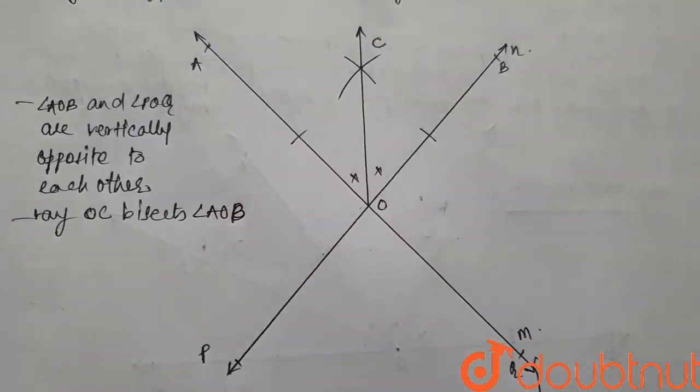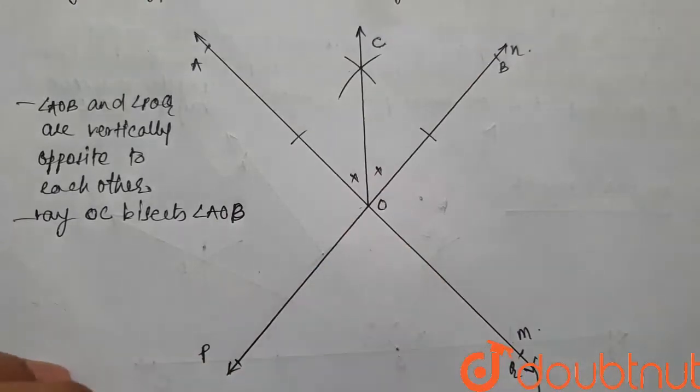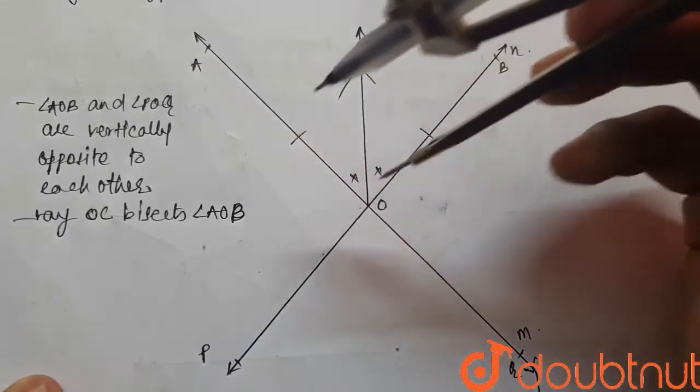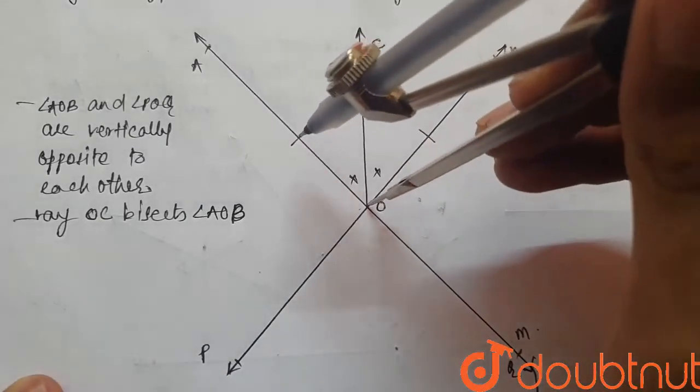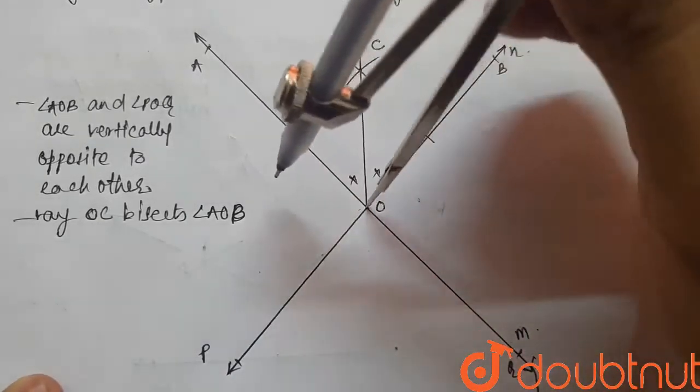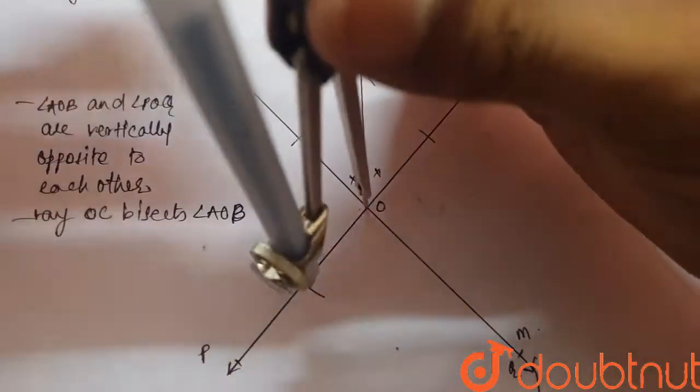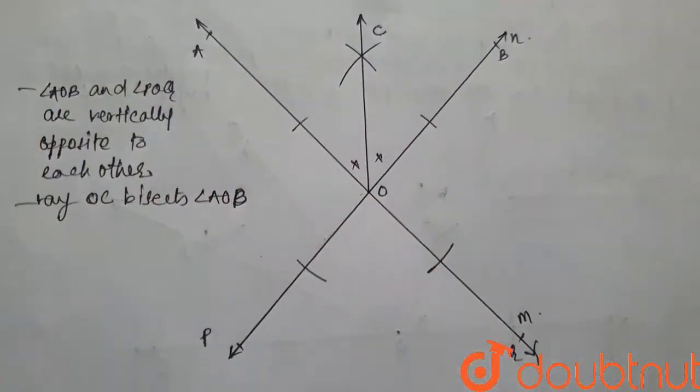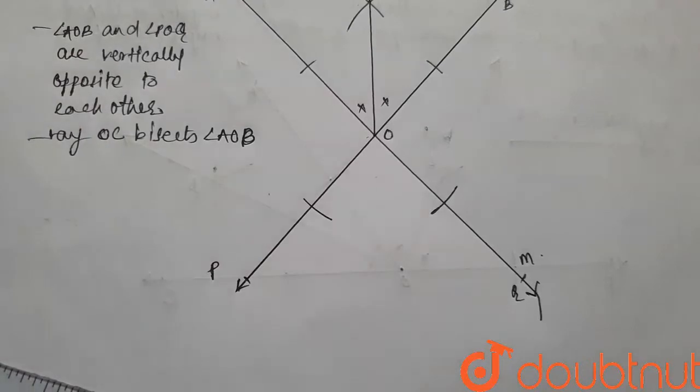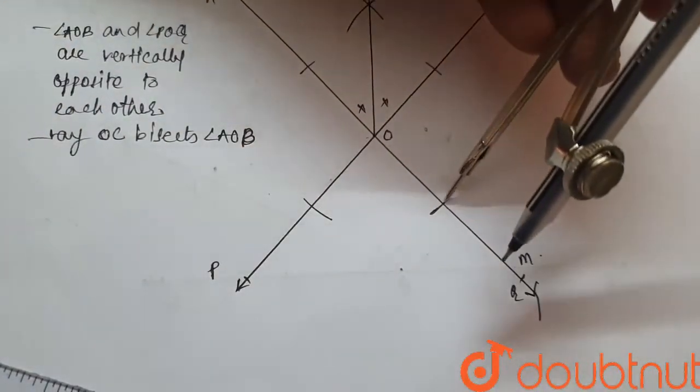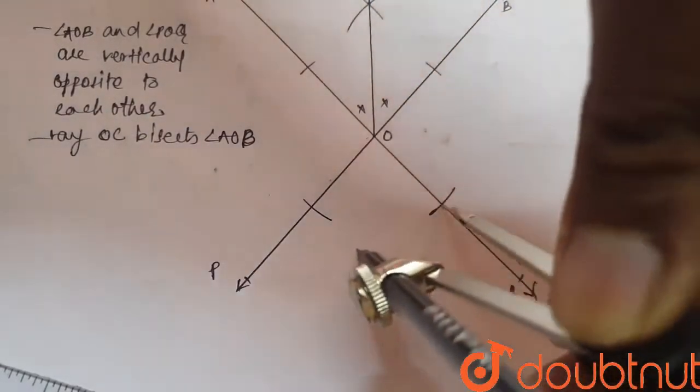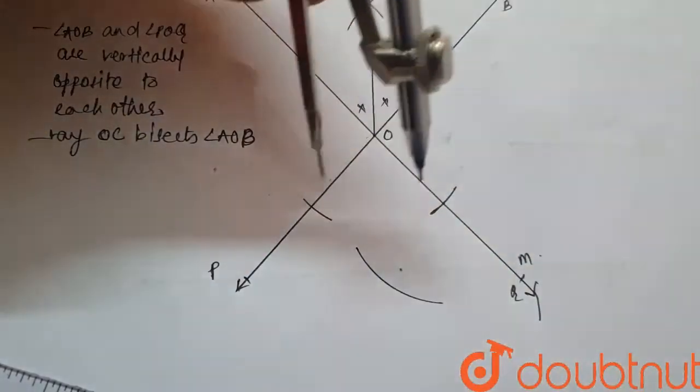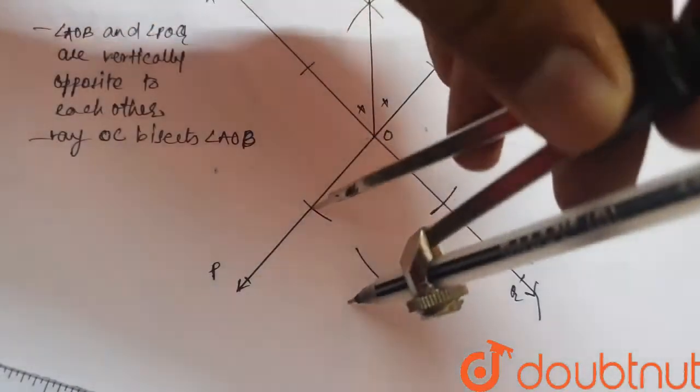Now, step two is that we have to bisect angle POQ also. So we will repeat the process which we did for angle AOB. So we will take a compass, place it on O and make two arcs on both of the sides of the angle, and then placing the compass on both of these arcs, we make two more arcs in the center of the angle like this and these two arcs intersect.